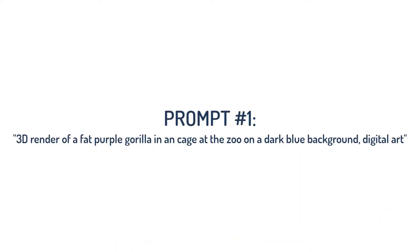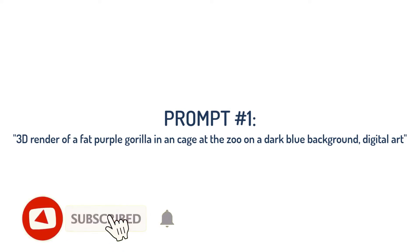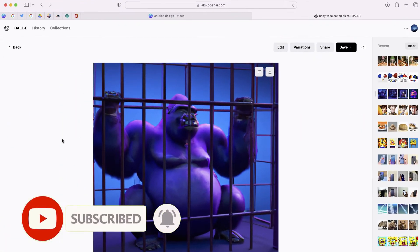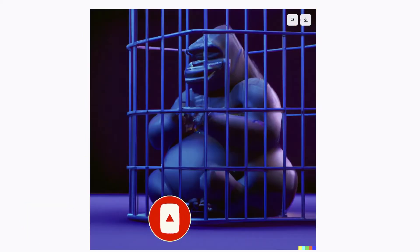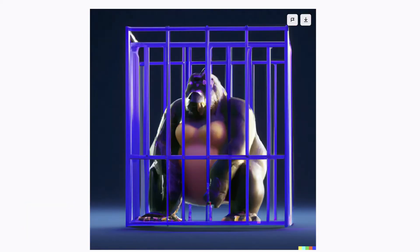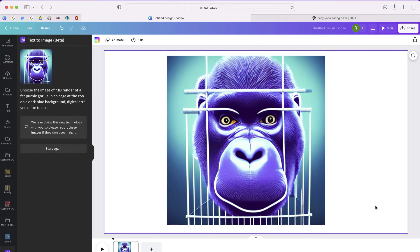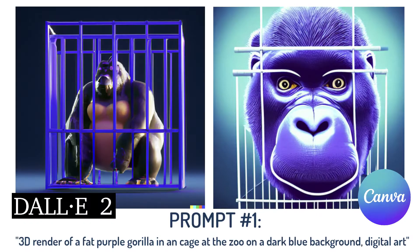So first I'm going to choose this prompt: a 3D render of a fat purple gorilla in a cage at the zoo on a dark blue background, in the style of digital art. These are the images that DALL-E 2 was able to come up with, and this is what Canva's text to image came up with. On your screen you see DALL-E on the left and Canva on the right.